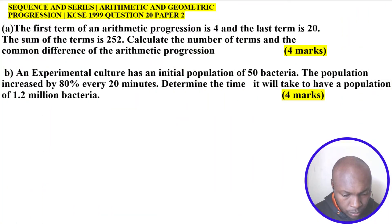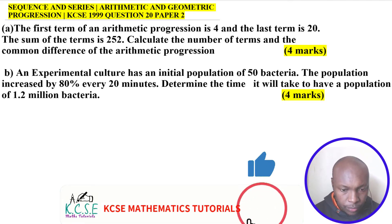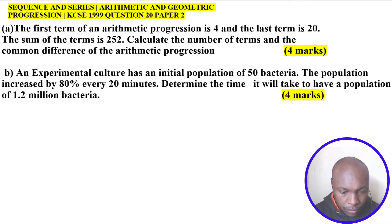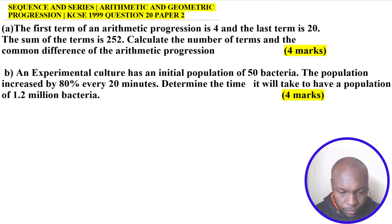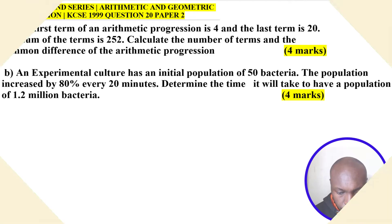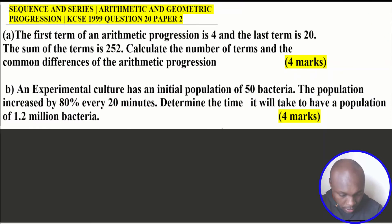Sequences and series: arithmetic and geometric progression. KCSE 1999 Question 20, Paper 2. Part A: The first term of an arithmetic progression is 4, the last term is 20, and the sum of the terms is 252. Calculate the number of terms and the common difference. Part B: An experimental culture has an initial population of 50 bacteria. The population increases by 80% every 20 minutes. Determine the time it will take to have a population of 1.2 million bacteria.